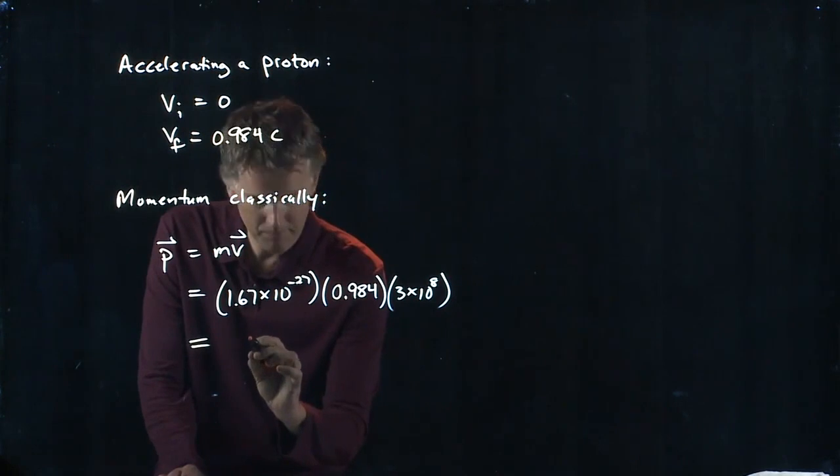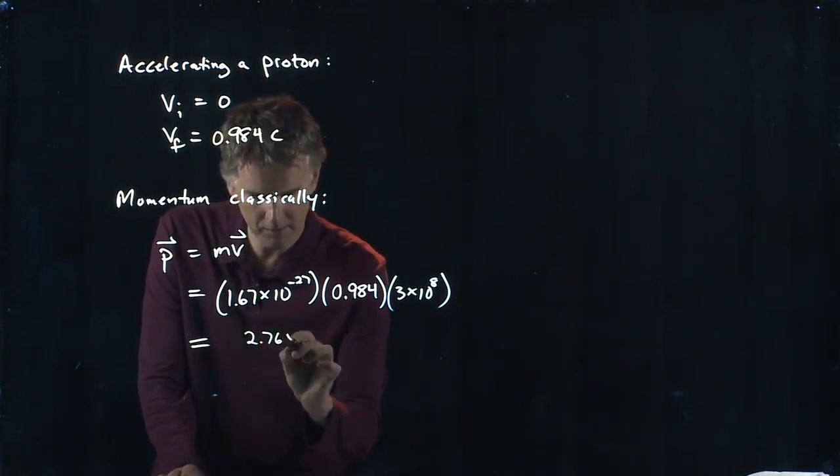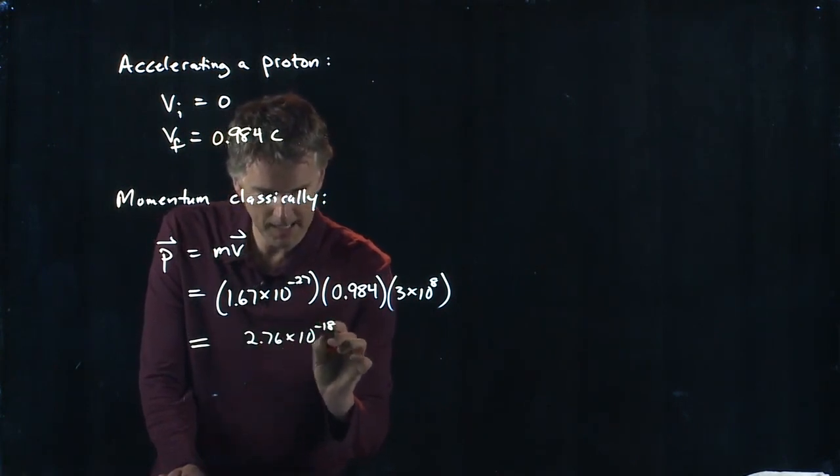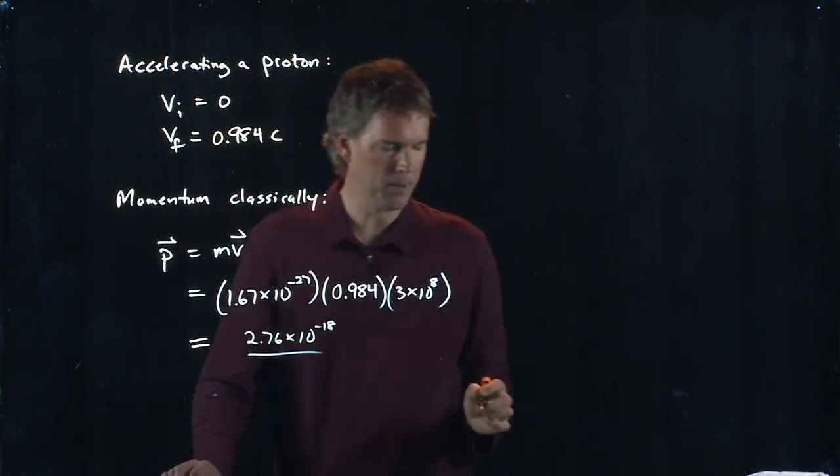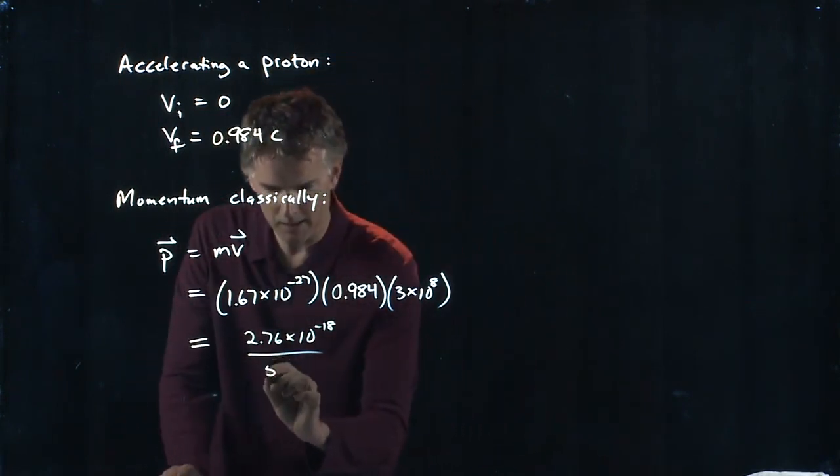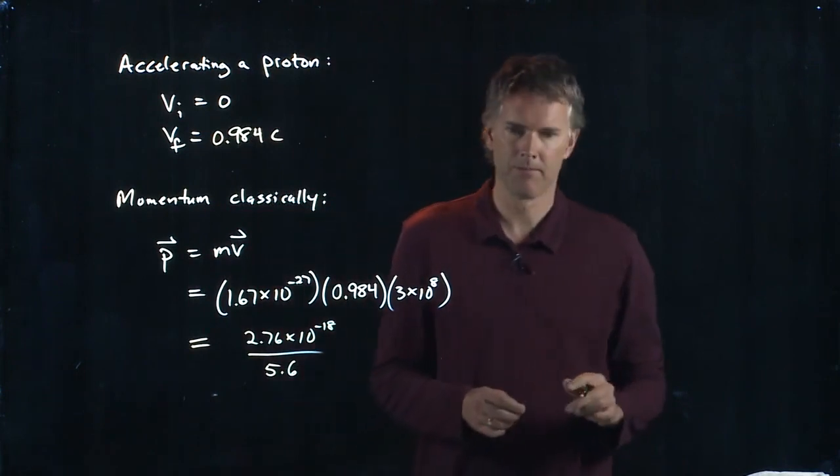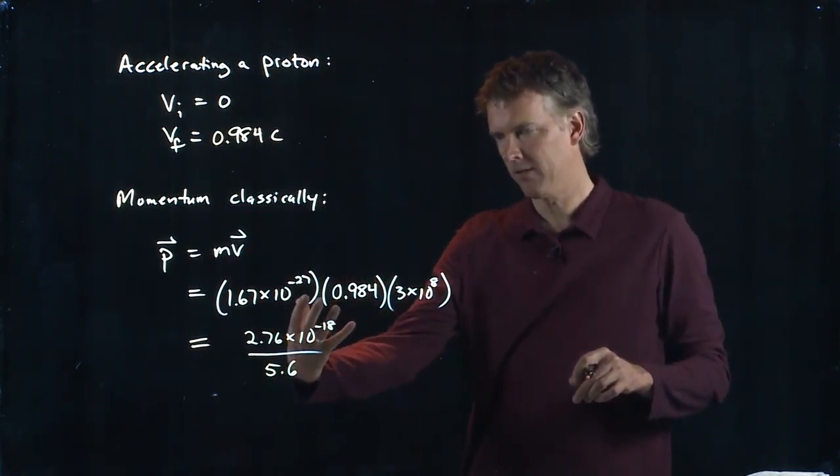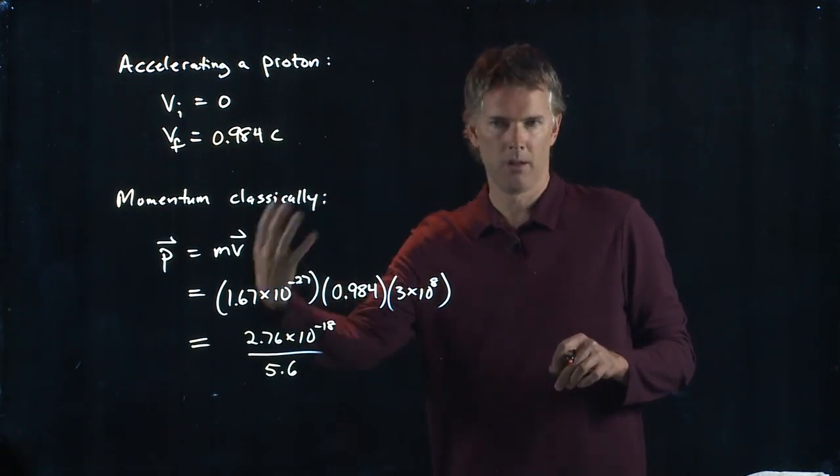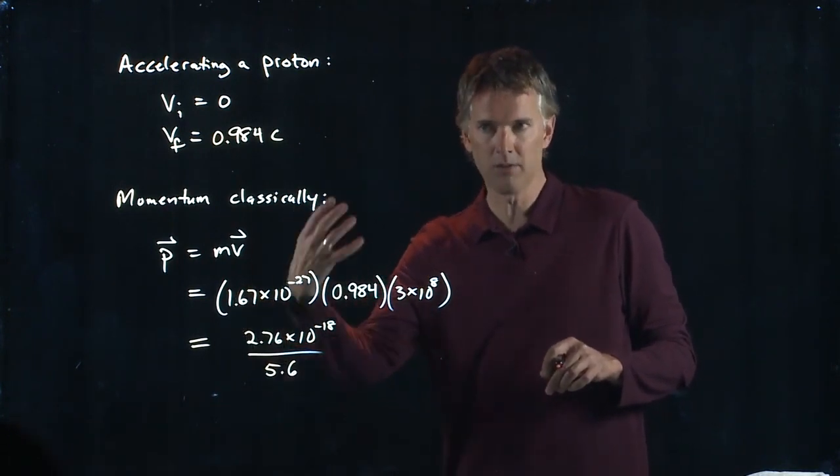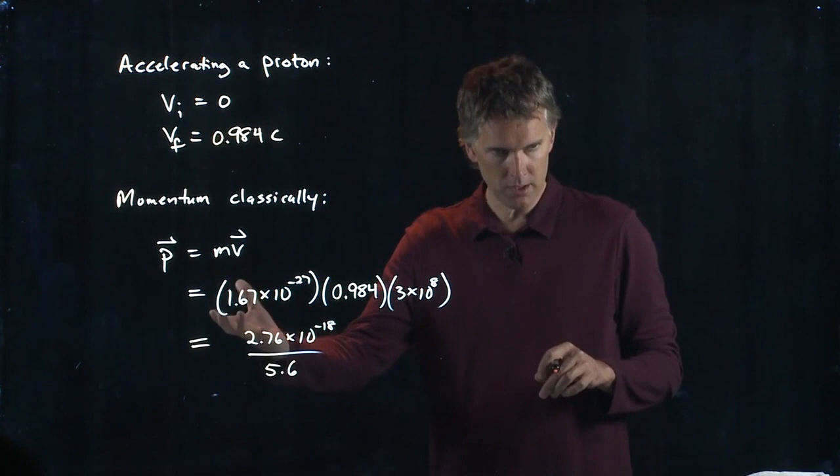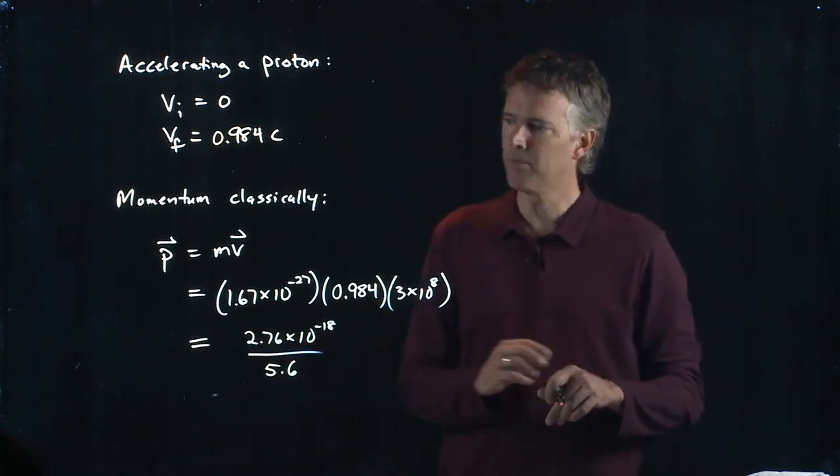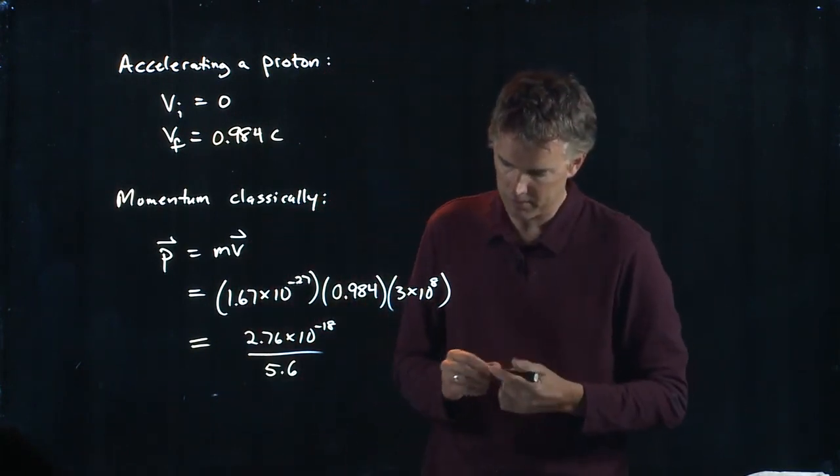I get what I had before, 2.76 times 10 to the minus 18 divided by the gamma that we calculated for ours, which was 5.6. So relativistic momentum takes significantly more oomph to get these things going, significantly more energy to get these particles going. And it's because of that gamma factor that it keeps increasing.